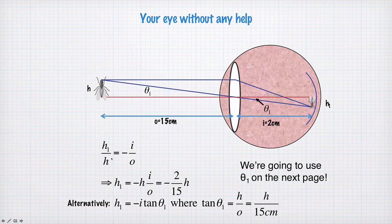So we have the ratio of h1 to h must be negative i on o. This just comes from similar triangles. So we can rearrange this to find h1 being equal to negative 2 divided by 15 times h. Or alternatively, we can write that h1 is equal to negative i tan theta1, where tan theta1 is h divided by o, or h divided by 15 centimeters. So this is an expression for tan theta1, which is h on o or h on 15 centimeters. We're going to use this definition of tan theta1 on the next page.